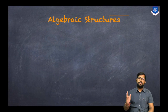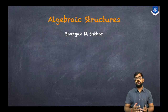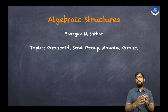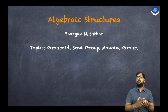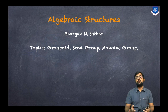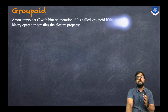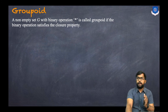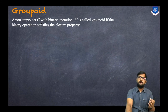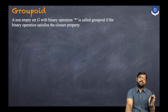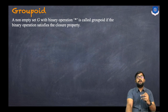Hey everyone, this is Bhargav Sudhar. In today's session, we'll discuss algebraic structures. Specifically, we'll learn what are the groupoid, what is a semi-group, what is a monoid, what is a group, and what is an abelian group. A set having one or more binary operations is called an algebraic structure.